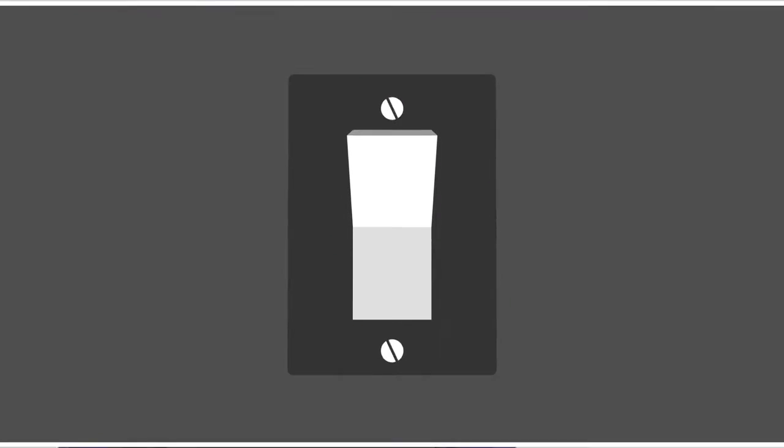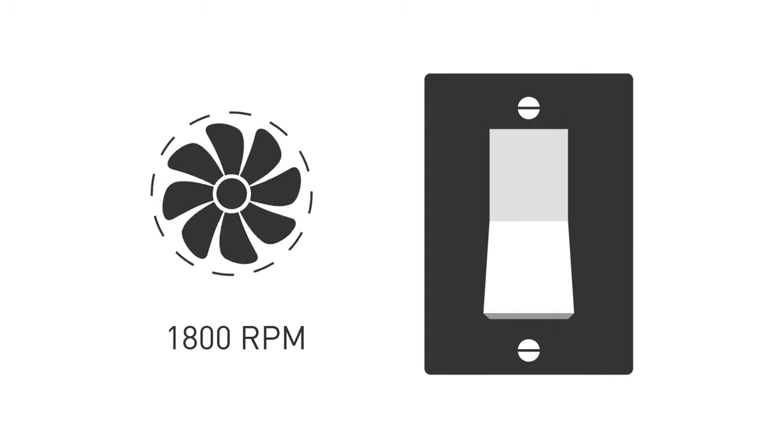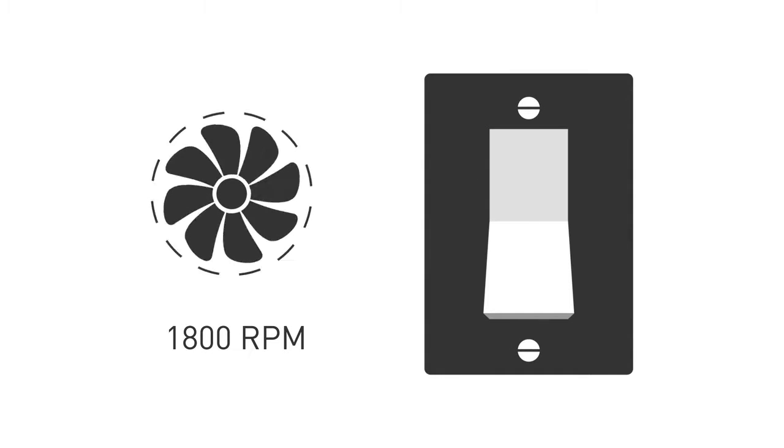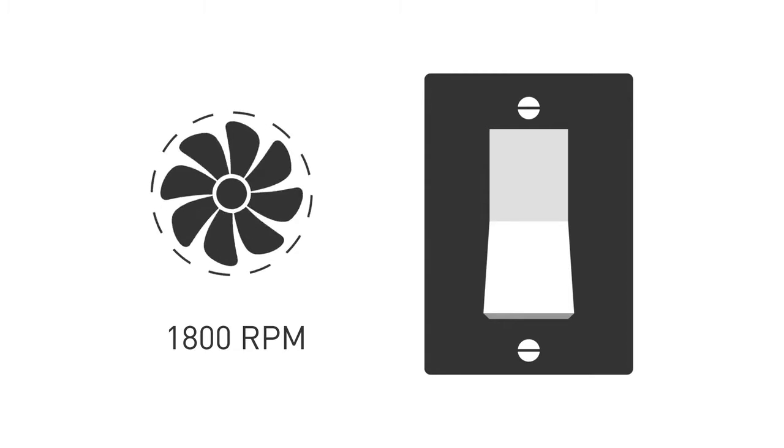Unlike for example an across the line starter which is more like a light switch, you would turn the switch on which would magnetize the motor and it would run at the speed that the motor is designed to run at such as 1800 RPM and you can't vary it.